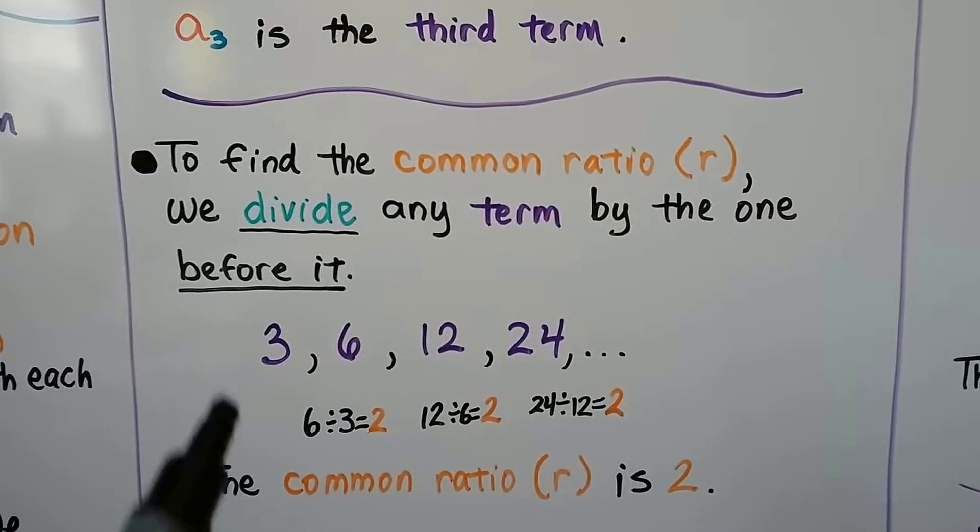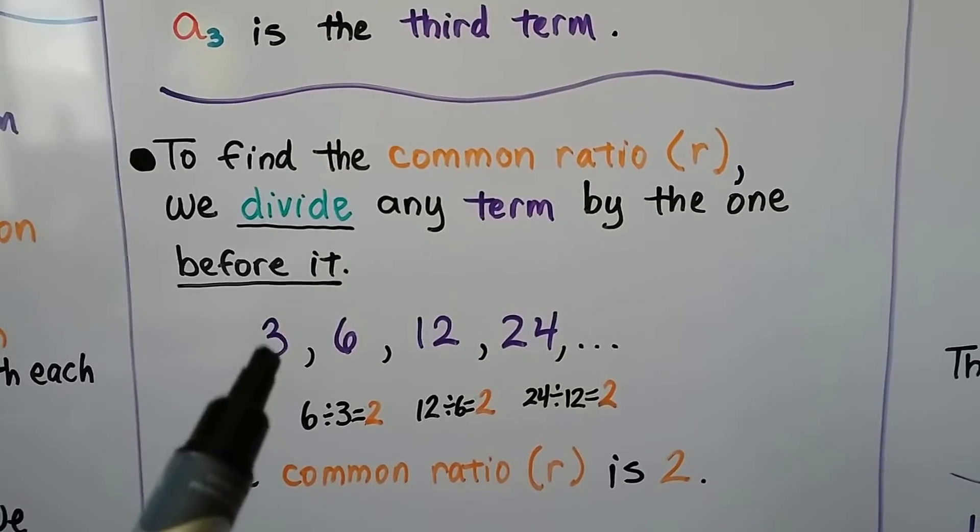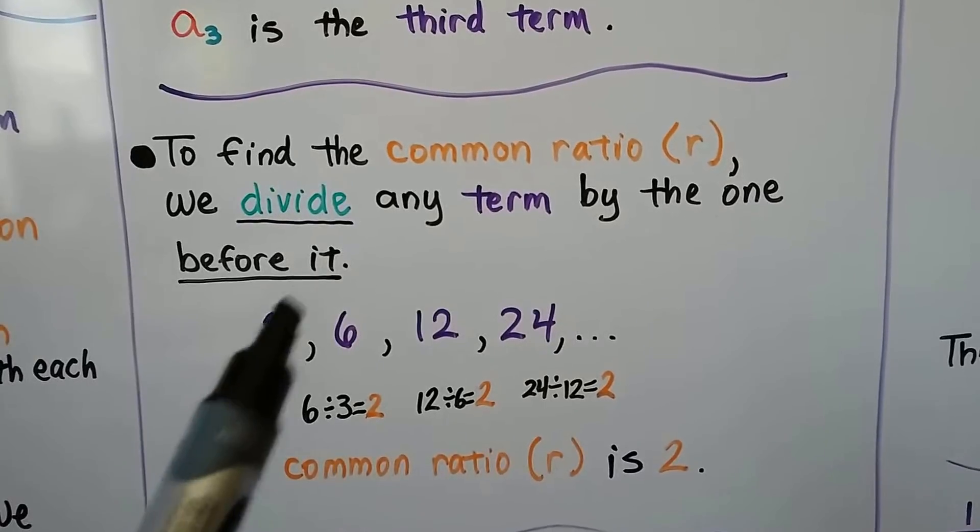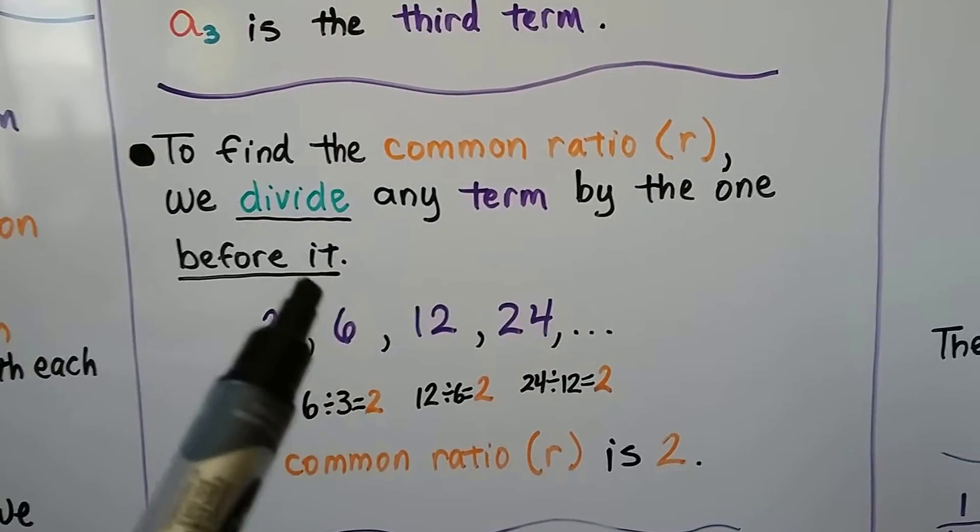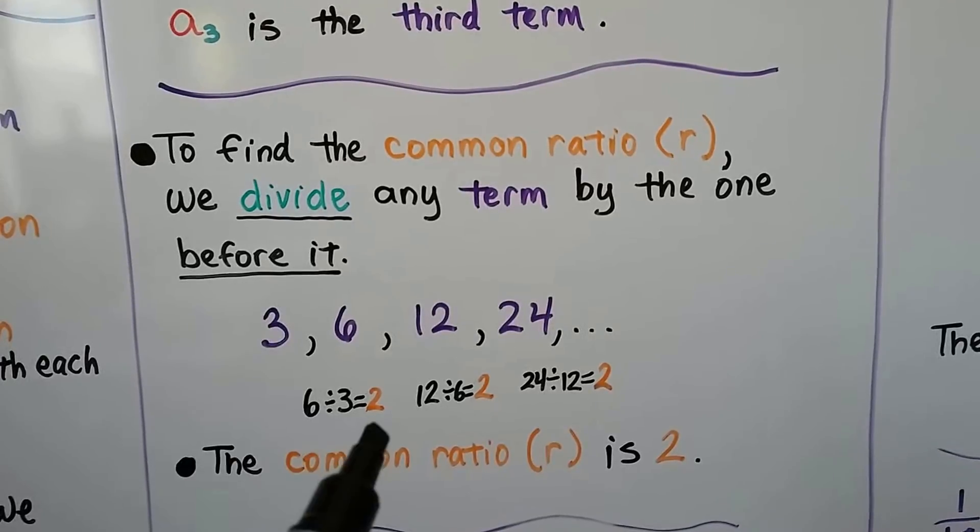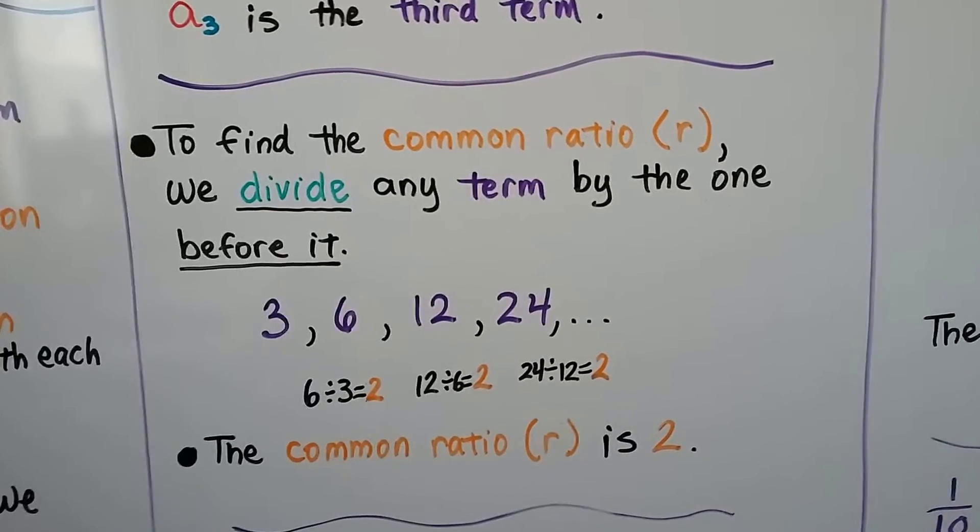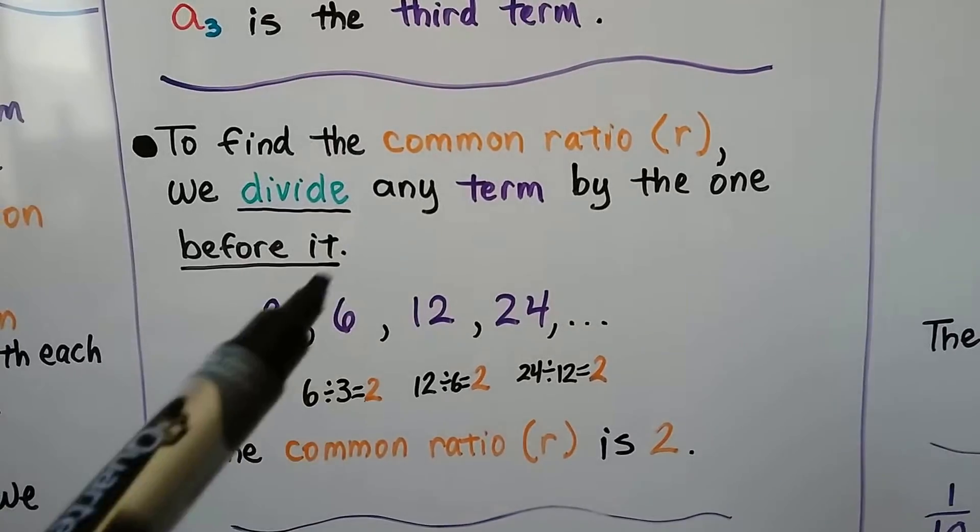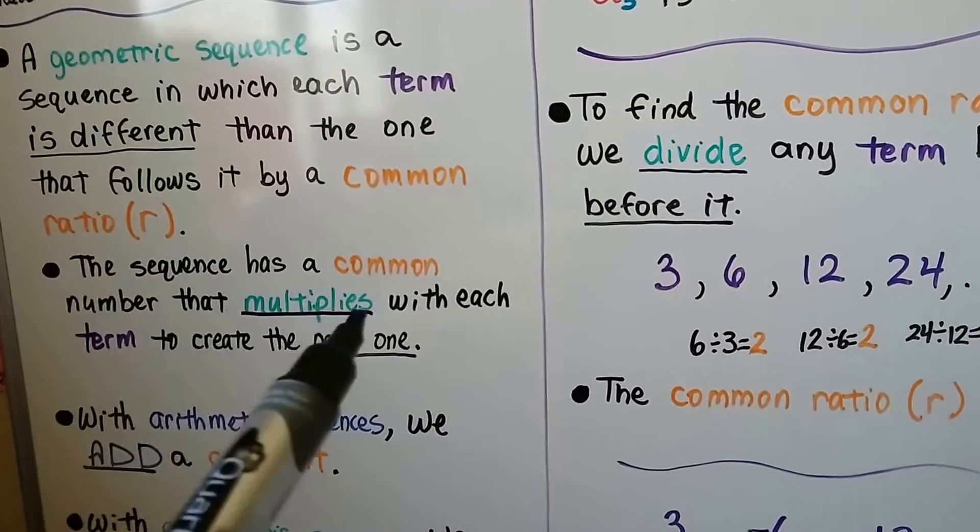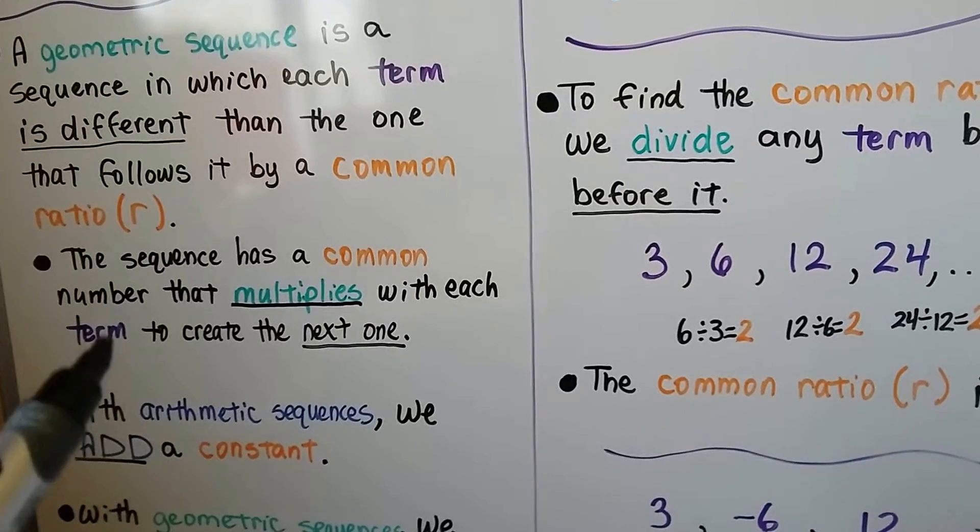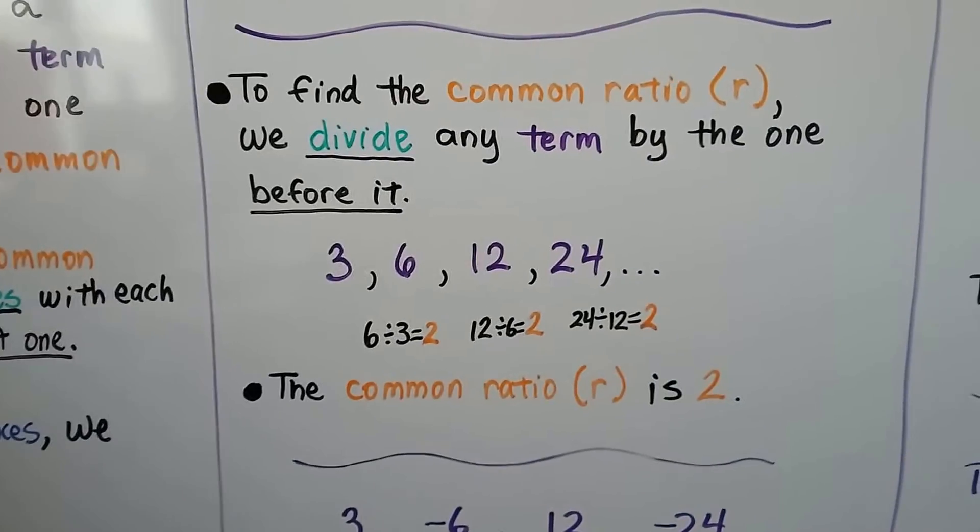So here we have 3, 6, 12, and 24 and the common ratio is the number that we're going to multiply this number by to get that number. We can take this 6 and divide it by 3 to find the common ratio is 2. 12 divided by 6 is 2. 24 divided by 12 is 2. So we divide to find the common ratio, but to find the term, there's a common number that's multiplied to get the next number.